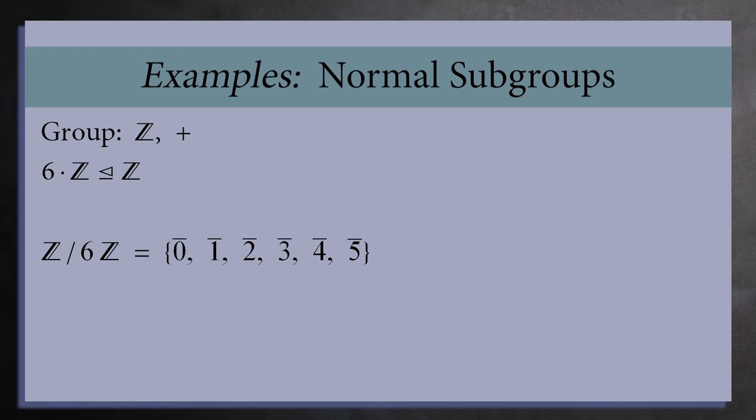This is the abstract algebra way of talking about the integers mod 6. The cosets are the congruence classes, and we write A is congruent to B mod 6 whenever A and B are in the same congruence class.